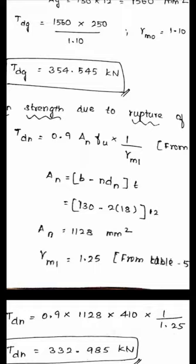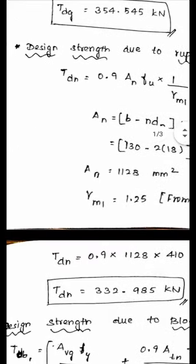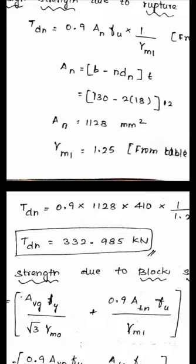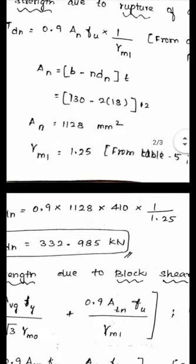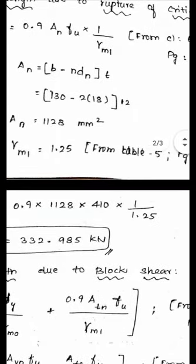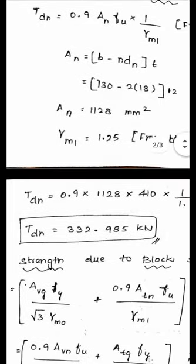Substituting all values into TDN = 0.9 × 1128 × 410 / 1.25, we get TDN = 332.985 kN. So TDG = 354.545 kN and TDN = 332.985 kN are calculated.